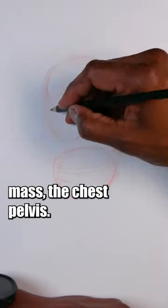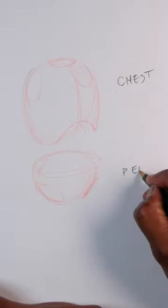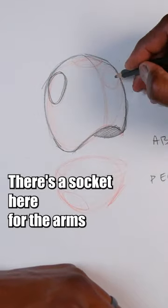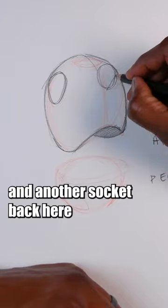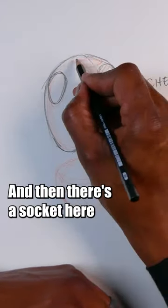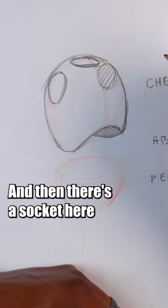This is basically the center mass, the chest and pelvis. There's a socket here for the arm, there's another socket back here for the other arm, and then there's a socket here for the neck.